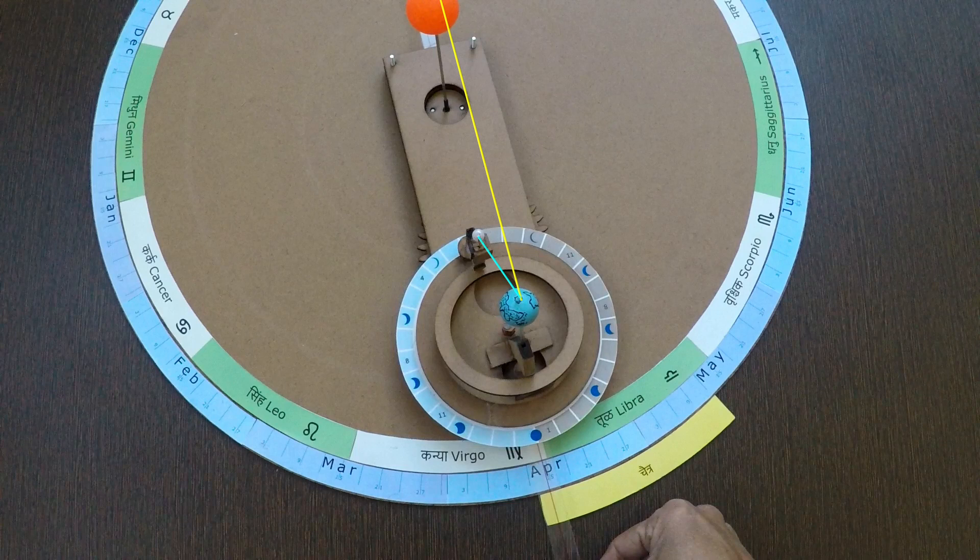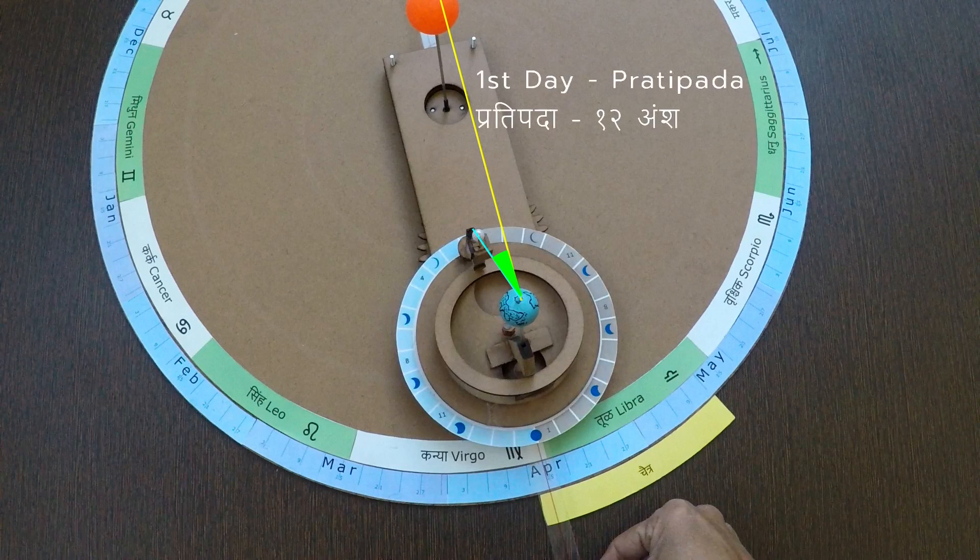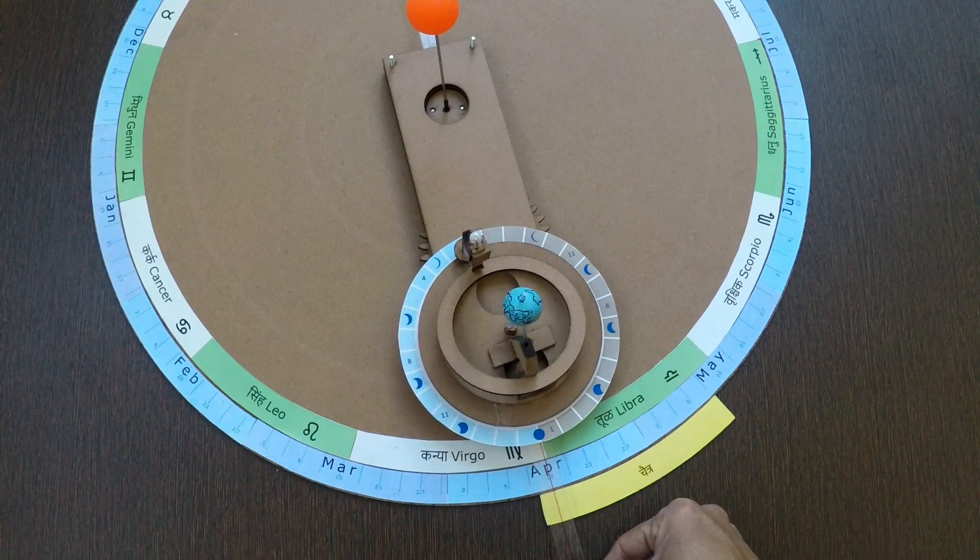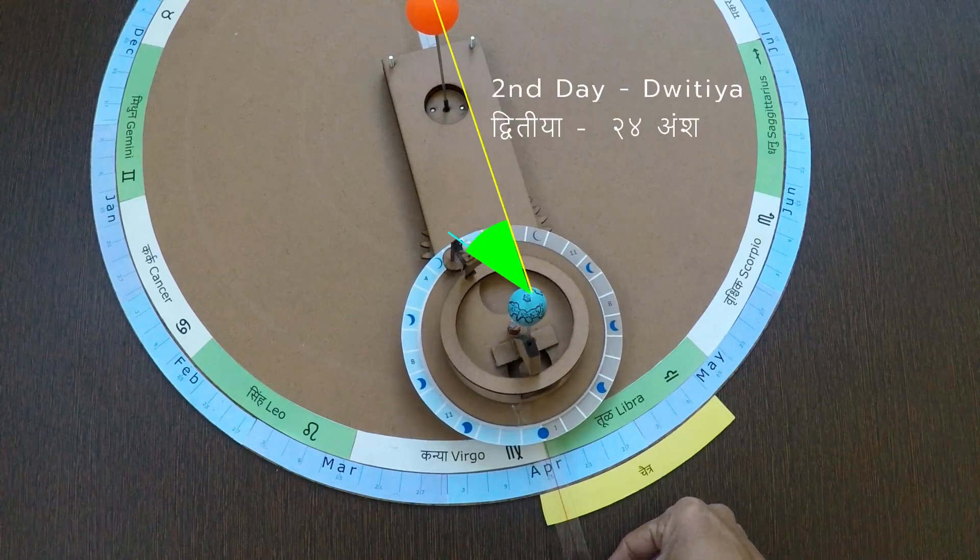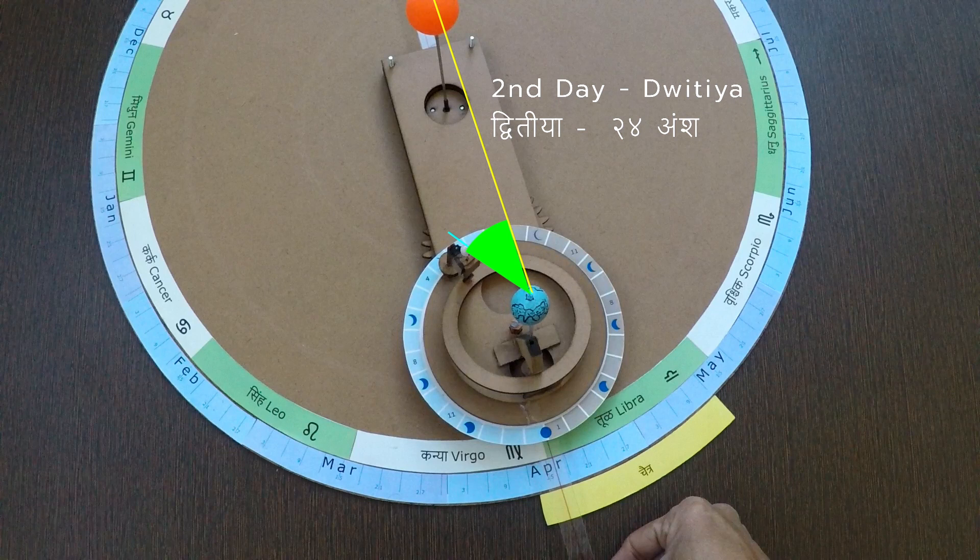If moon travels 12 degrees, it is Pratipada or first day. After 24 degrees, Dvitiya or second day, and so on.